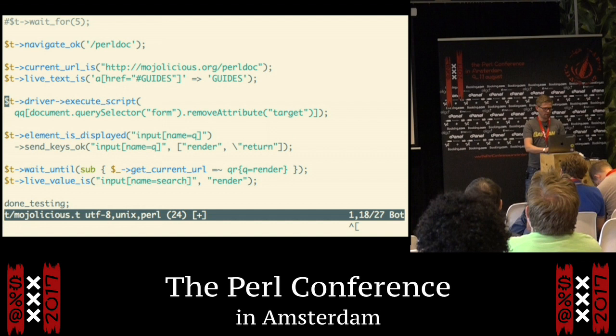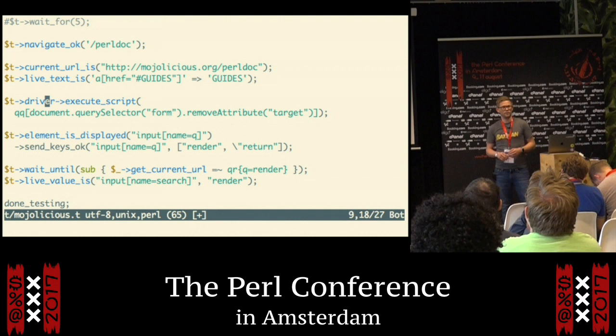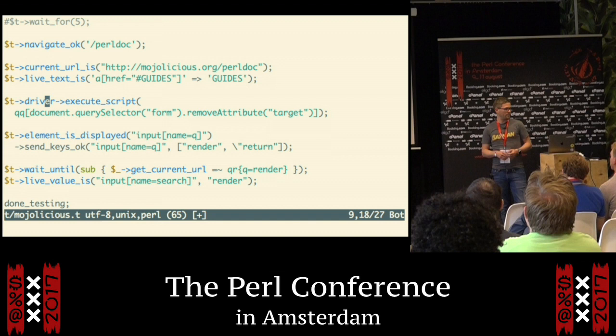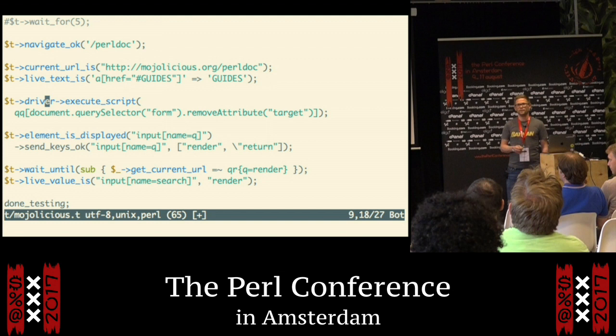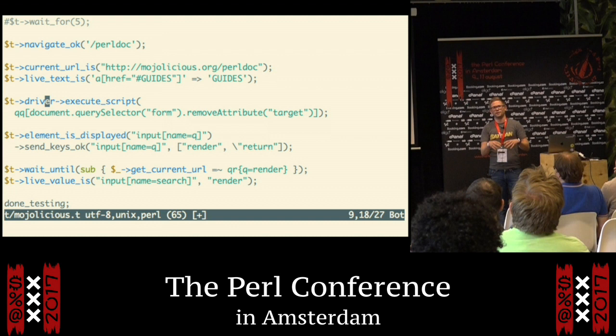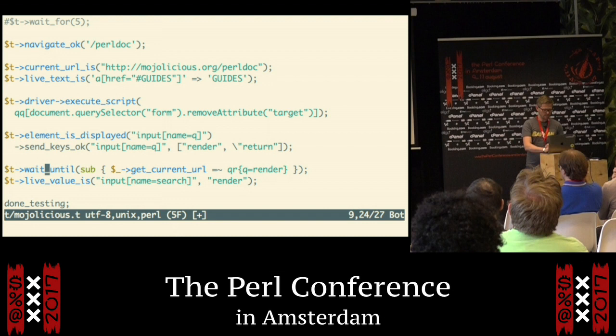That means you can both test the server-side text and also the text that is inside the browser. This object has a driver attribute, which is the remote driver object, so you can call any method that module provides. Here I'm going to do execute_script, which runs a JavaScript snippet inside your browser. What I'm doing here is just removing the target attribute from a form, because on the Modulicious website it's going to open up a new window, and I want it to run in the same window.